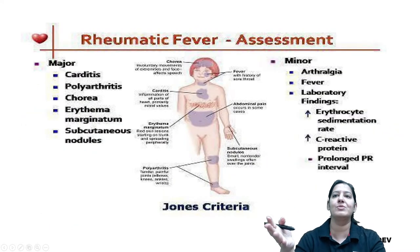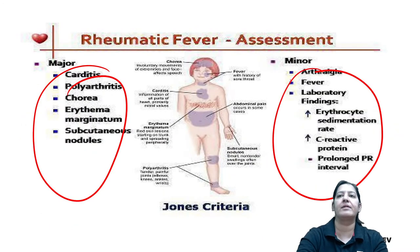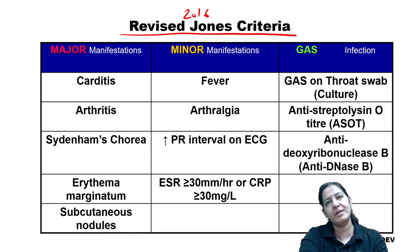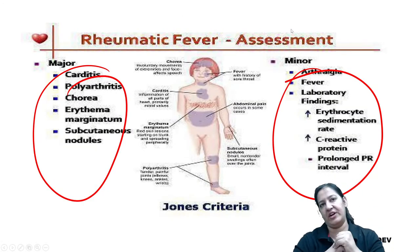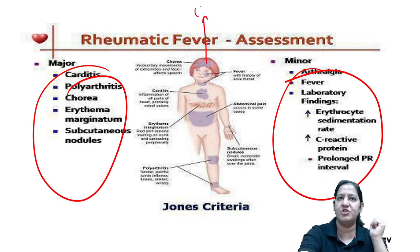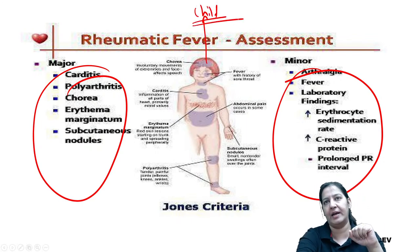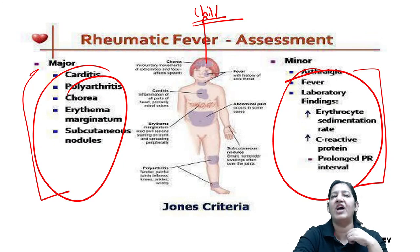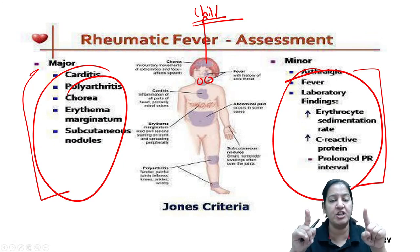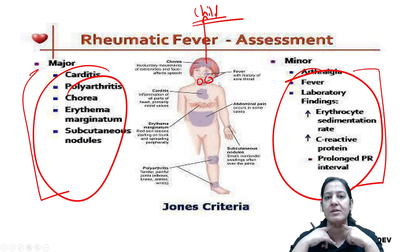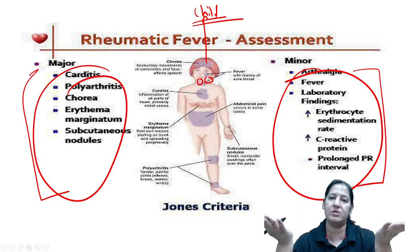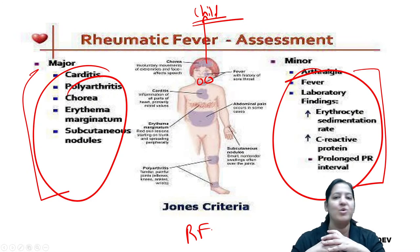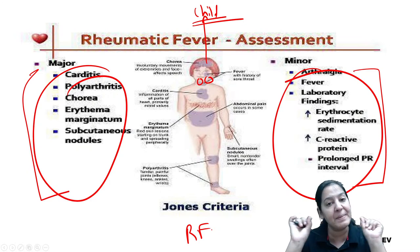In 2016, Jones criteria were revised. The revision added a mandatory additional criterion called the GAS criteria — Group A Streptococcal infection criteria. In revised Jones criteria: the five major criteria remain unchanged; minor criteria reduced from five to four — the repeated history of rheumatic fever is removed. So now: four minor criteria (fever, arthralgia, elevated lab values, prolonged PR interval).